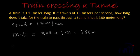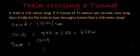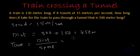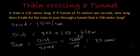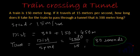Now we have to find the time. Time equals distance divided by speed. The distance to be travelled is 450 meters and the speed is 15 meters per second. So time equals 450 divided by 15, which equals 30 seconds. So the time required for the train to pass through the tunnel is 30 seconds.